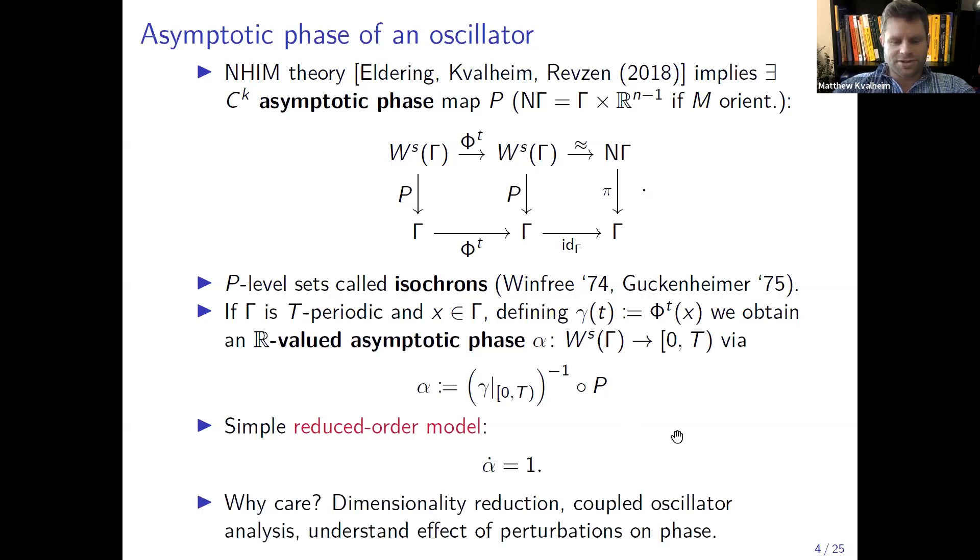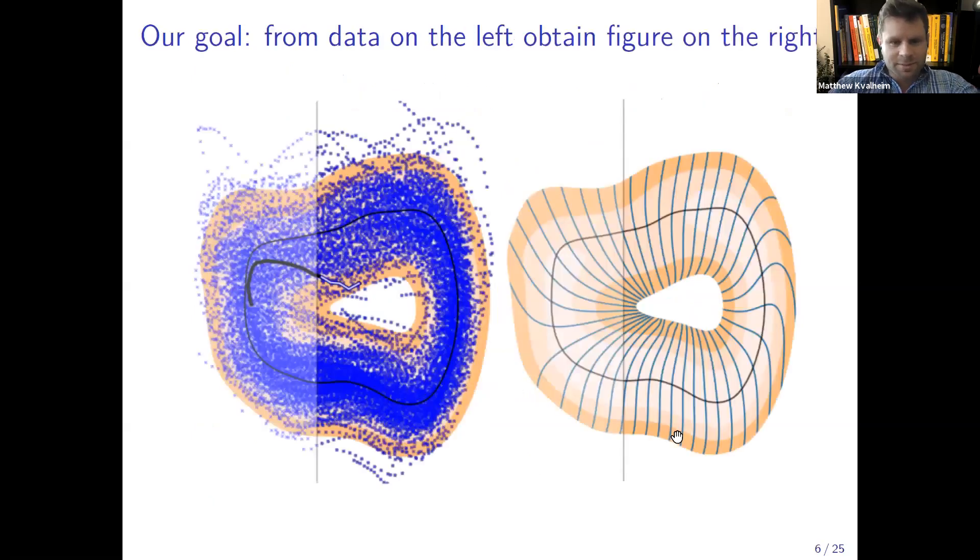Now our goal in a picture is to take data like the data set I showed you before without knowing this limit cycle and compute an estimate of the limit cycle, but also compute an estimate of the asymptotic phase and thereby also all of these isochrones, something like what's shown on the right here.